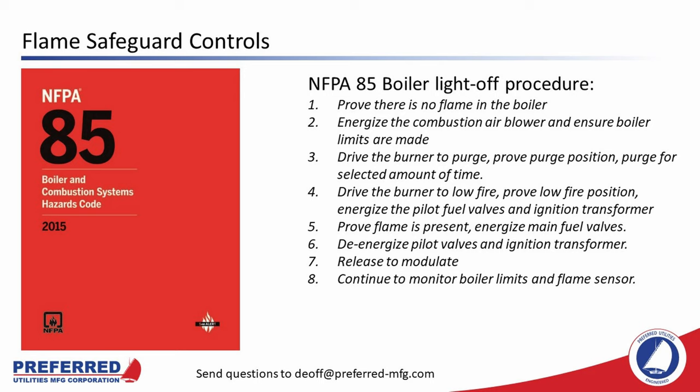The NFPA boiler light-off procedure is as follows. First, you prove that there is no flame in the boiler using an input from the flame scanner. Second, you energize the combustion air blower and ensure boiler limits are made. Then the flame safeguard controller will drive the burner to purge, prove purge position with either a limit switch or feedback pots, and then purge for the selected amount of time — usually five air volume changes, sometimes as many as eight to ten depending on the type of boiler.